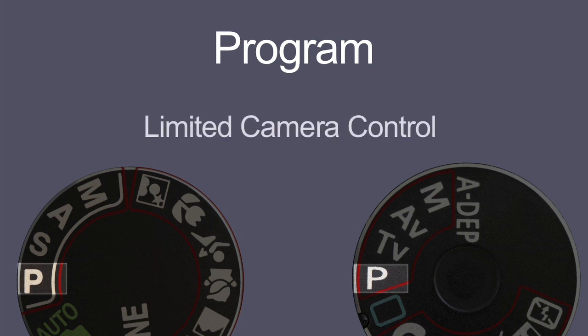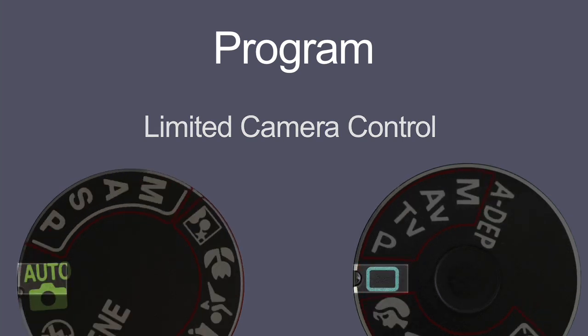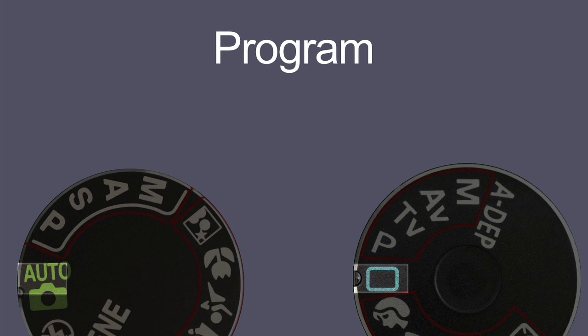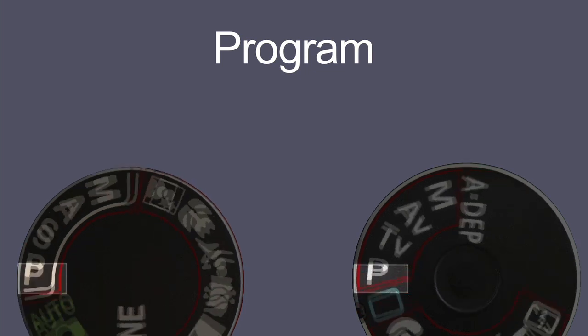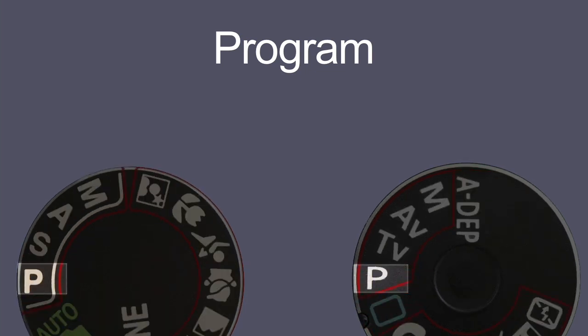With program mode you can also override some of the camera settings. That makes program mode, in my opinion, more usable than fully automatic mode. In fully automatic mode, if your camera has it, the disadvantage is that you cannot override the automatic settings. Program mode is very good if you're using flash and you don't understand exactly how your flash works. So if you're new to photography and you want to spend some time thinking about composition, I would suggest that you use program mode.